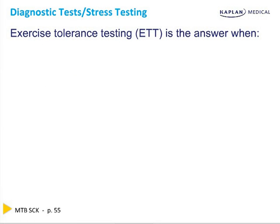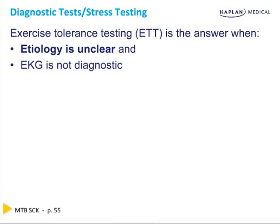Exercise tolerance testing is used synonymously with the term stress test. A stress test is used when the etiology is not clear. If a person has chest pain that is exertional, relieved by rest, and has a repeated clear pattern, you don't need a stress test — you already know they have ischemic pain. If the EKG shows clear ST segment depression, you don't need a stress test. If the EKG or history is unclear, you need a stress test.